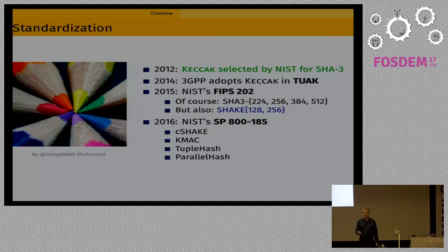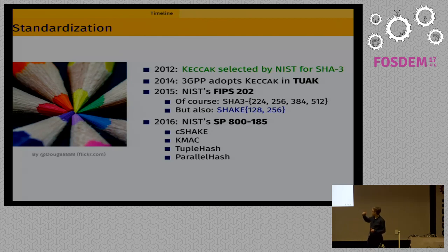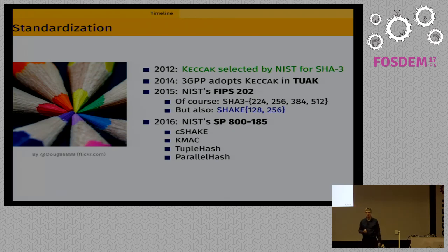In 2012, the contest ended with the announcement from NIST that Keccak was chosen as the winner of the SHA-3 competition. Three years later, NIST published the FIPS 202 standard with the SHA-3 hash functions, meant as a drop-in replacement for SHA-2. They also standardized extendable output functions (XOFs) called SHAKE-128 and SHAKE-256, generalizing hash functions to arbitrary output size. The 3GPP consortium published a standard called TUAK using Keccak internally for SIM card applications, and more recently NIST published new functions in special publication 800-185.